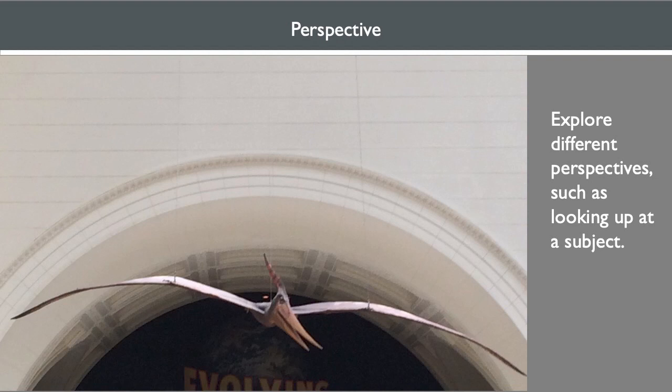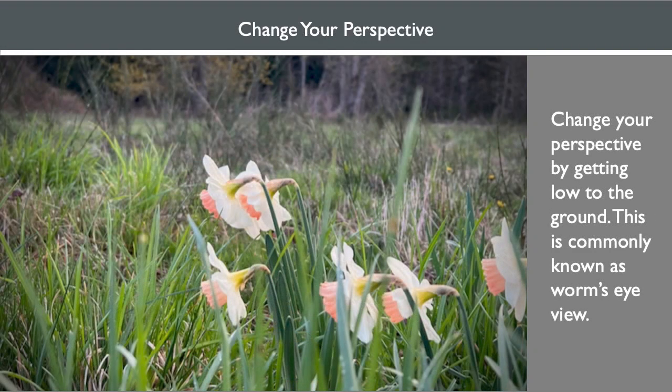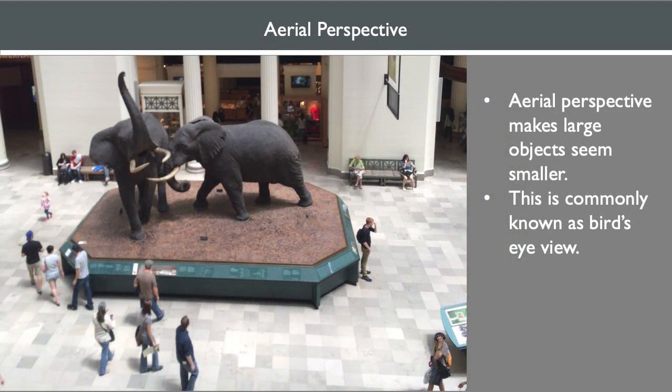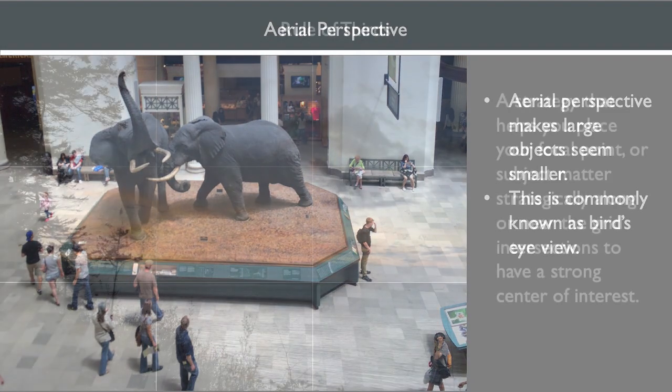Perspective refers to your relationship to your subject matter. It's important to explore different perspectives, such as looking up at a subject. Change your perspective by getting low to the ground — this is commonly known as worm's eye view. Aerial perspective minimizes subjects, especially if you're using a wide-angle lens, and can make objects seem small. This is commonly known as bird's eye view.